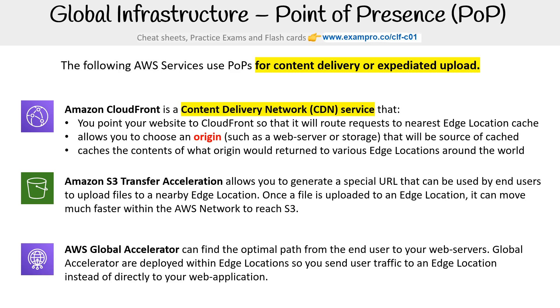Then you have AWS Global Accelerator, which can find the optimal path from the end user to your web servers. Global Accelerators are deployed within edge locations, so you send user traffic to an edge location instead of directly to your web application.